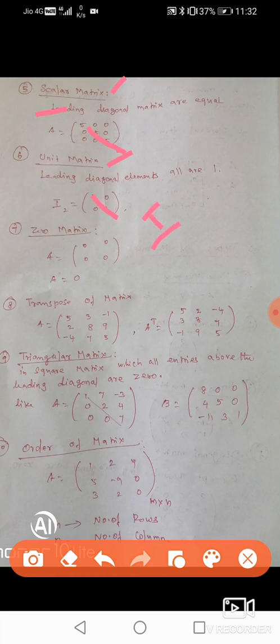For I3, the identity matrix is [1, 0, 0; 0, 1, 0; 0, 0, 1]. The zero matrix (null matrix): A = [0, 0; 0, 0] — all elements are 0.